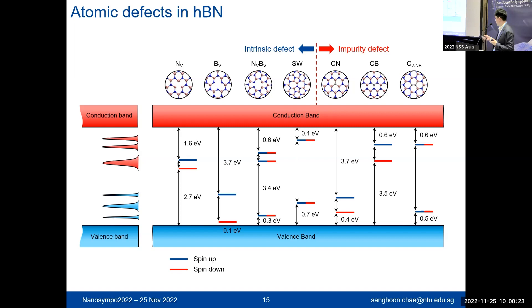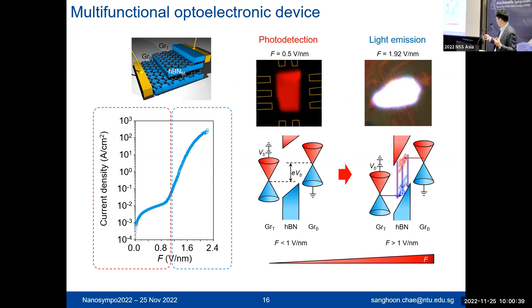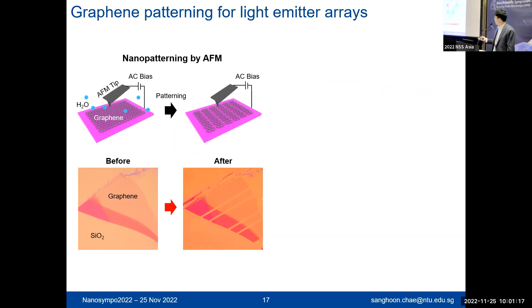To summarize: at low electric fields, this device acts as a photodetector by detecting interlayer photocurrents. If you apply more and more voltage, the device can now not only detect light but also emit light. So this is a bi-functional device — in one device it can perform both photodetection and light emission. The basis for this is defect states formed inside the boron nitride, and the defect-to-defect and band-to-defect transitions enable this large-scale light emission.